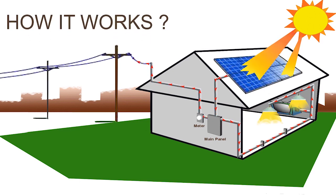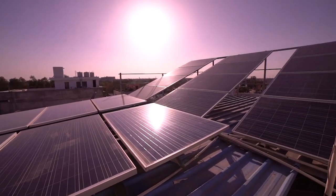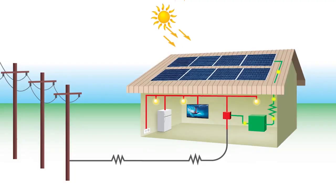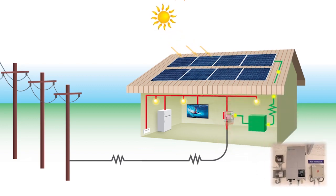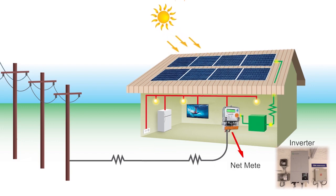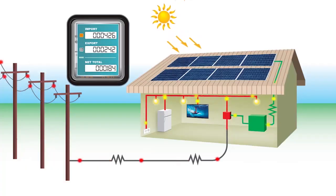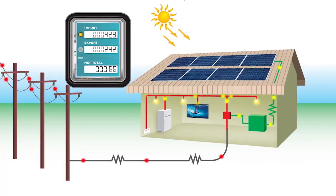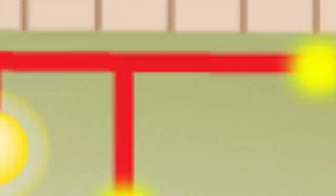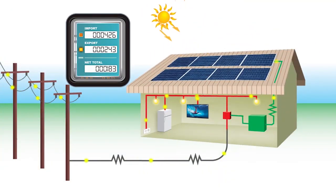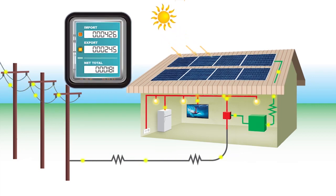How does a solar rooftop system work? The electricity generated by solar panels is converted using inverters that are connected directly to the public electricity supply grid using a net meter. A net meter records the energy produced by the solar system and consumed by the household simultaneously. When the solar system produces less energy than you are using, the net meter runs forward; when it produces more, the surplus goes back to the grid.